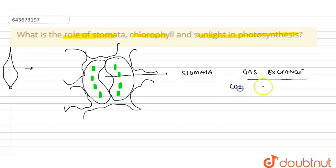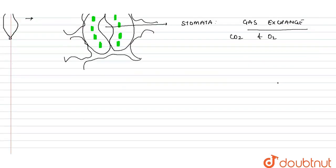The function of the stomata is in gaseous exchange. It helps in the exchange of carbon dioxide and oxygen. Now we'll look at a magnified structure of the chloroplast.